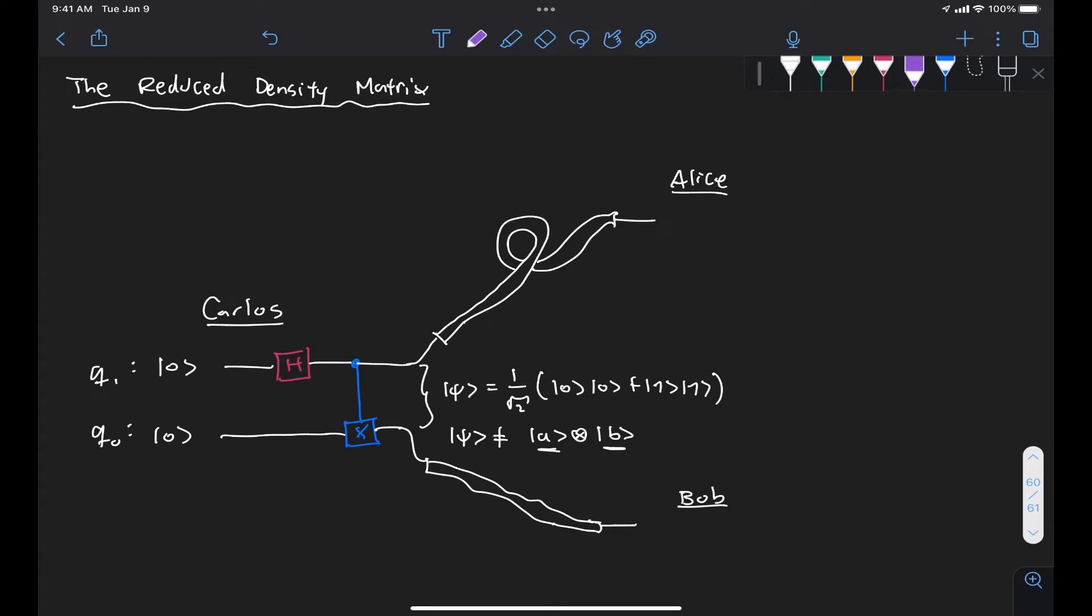But we do know that if Alice were to perform a measurement here, because these states are entangled, that measurement is going to project the state psi into either |00⟩ or |11⟩ with 50% probability of occurrence each. So if Carlos were to prepare this state over and over again and send it to Alice, every time she performs this measurement, she's going to get either 0 or 1 as an outcome, each with 50% probability of occurrence.